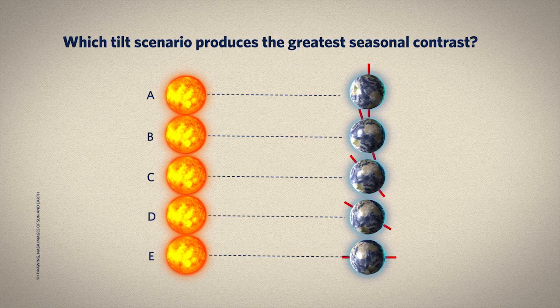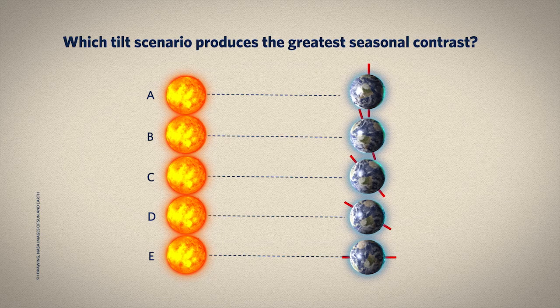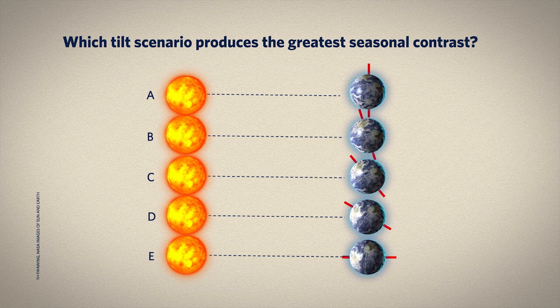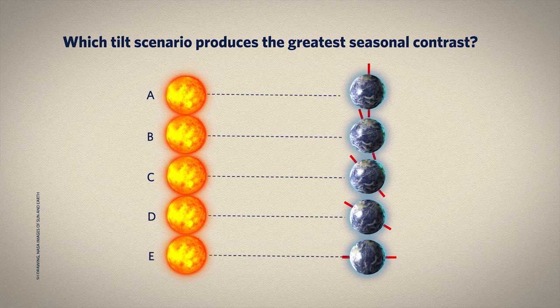We saw pretty easily the big 100,000-year cycles in the temperature data. We can analyze the data statistically, and we find that the 41,000-year tilt cycle is also there, and the periodicities associated with precession. We'll try a couple of questions. Just dealing with tilt here, which of these scenarios do you think produces the greatest seasonal contrast? That is, the hottest summers coupled with the coldest winters.